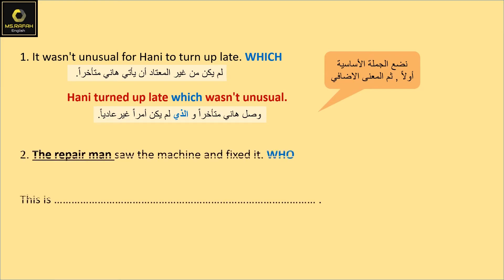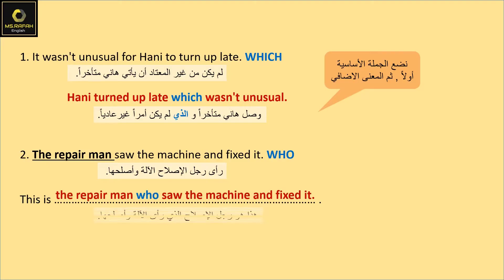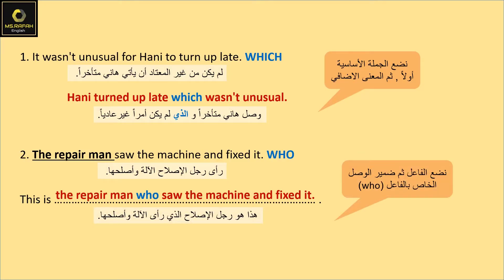The repairman sewed the machine and fixed it. We're going to use 'who'. Answer: 'This is the repairman who sewed the machine and fixed it.'